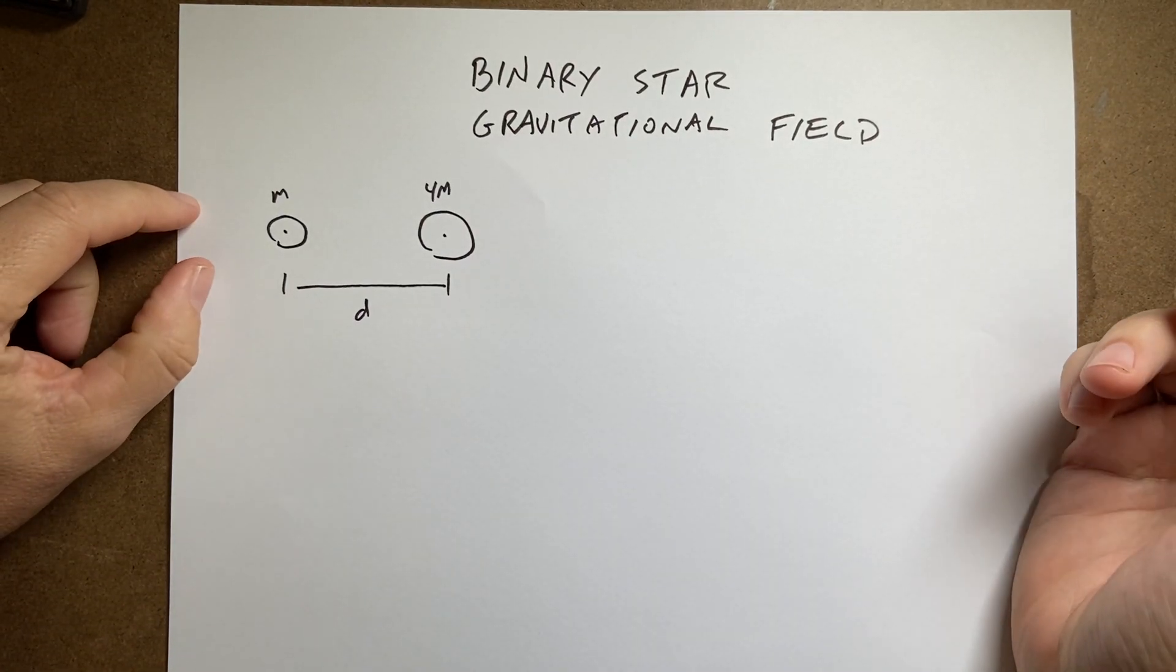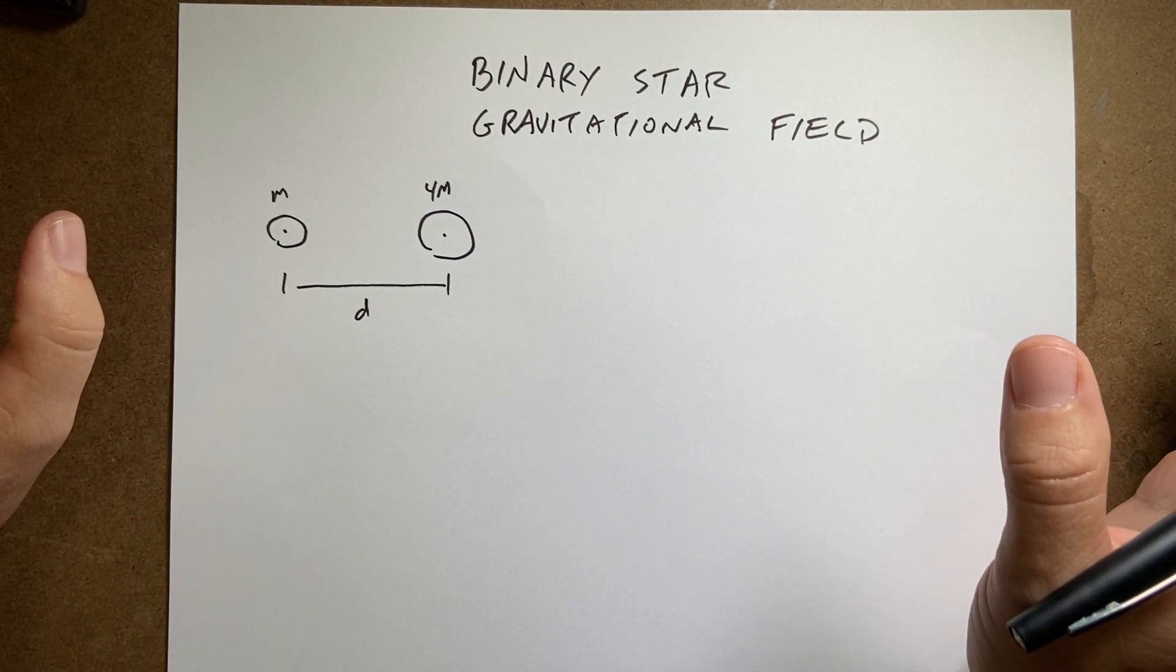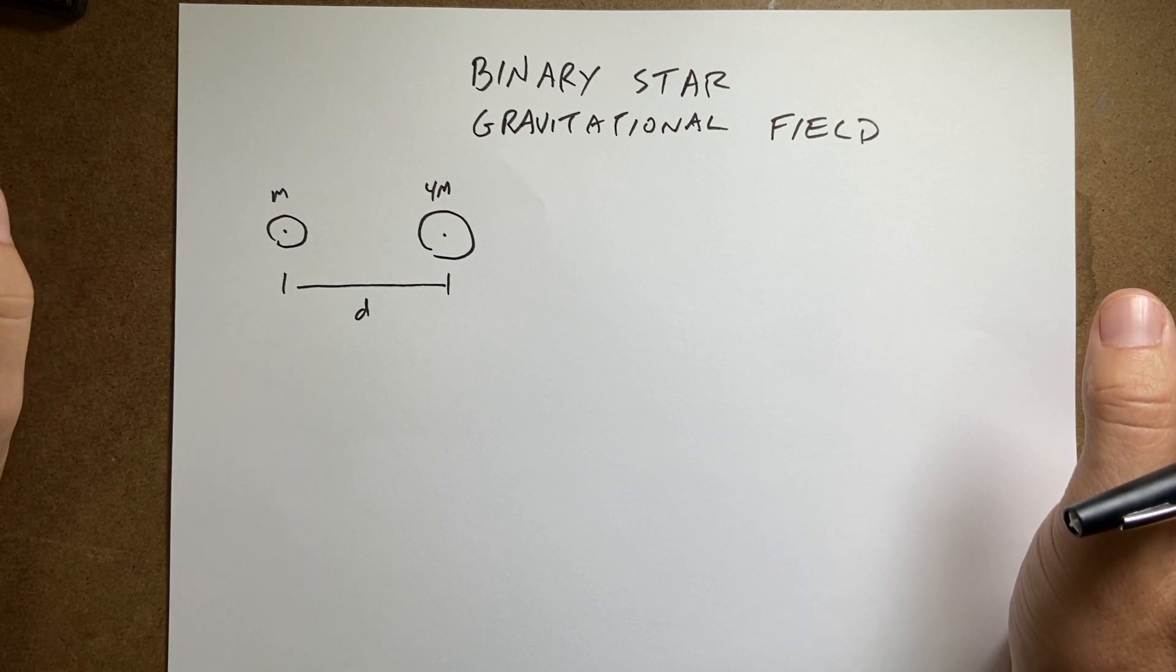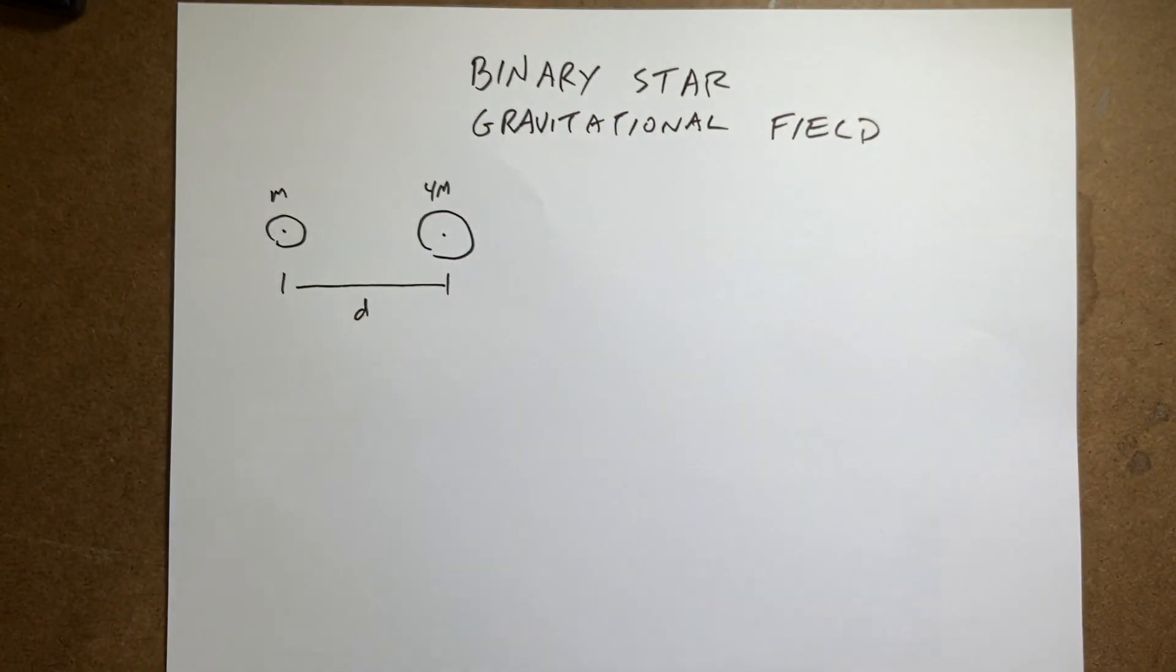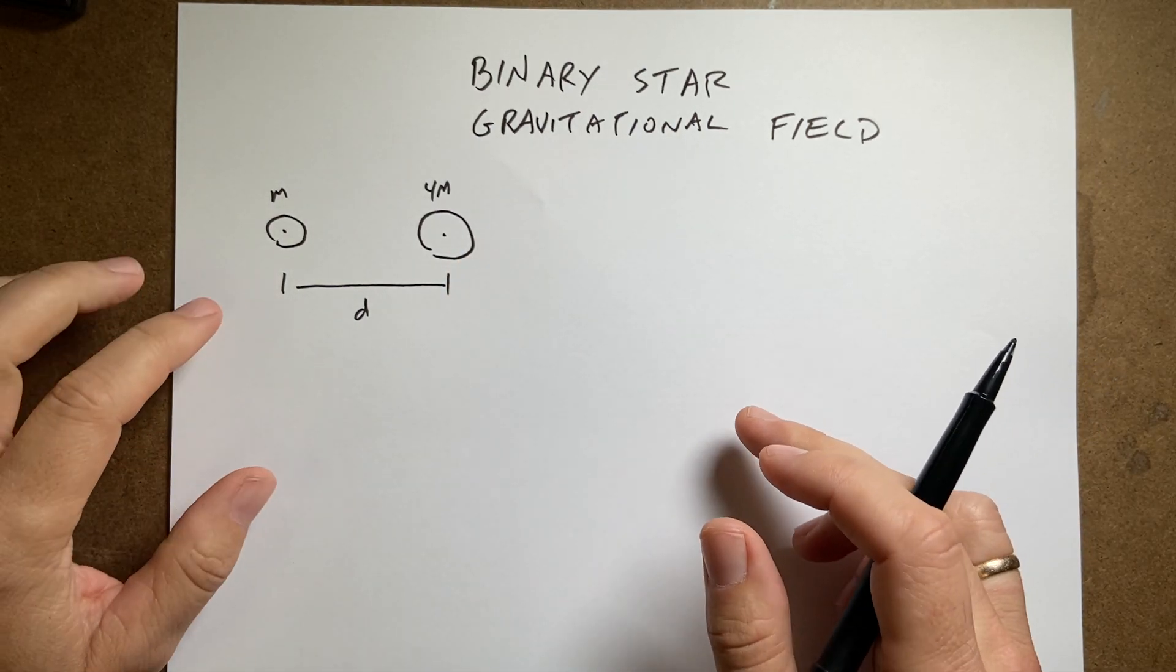Okay, suppose that we have a binary star system. There's a little trick here in that let's assume that these are just stationary in time, which they're not. They would be orbiting each other. But at this point, we want to calculate the gravitational field for these two masses.